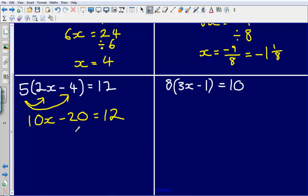So to get rid of this minus 20, to undo it I'm going to add on 20, simply again just doing the opposite. So now I've got 10x is equal to 32.